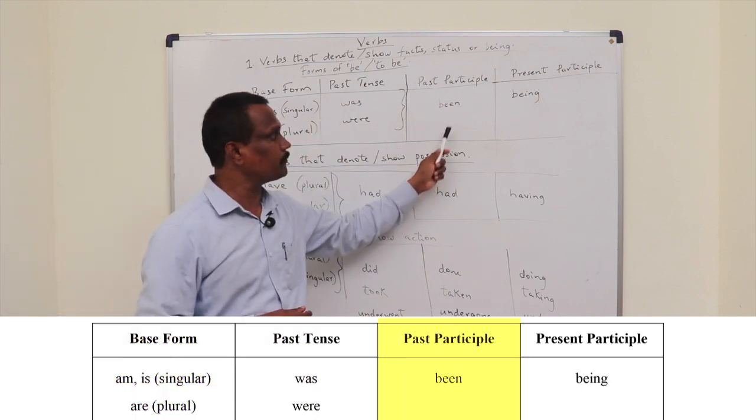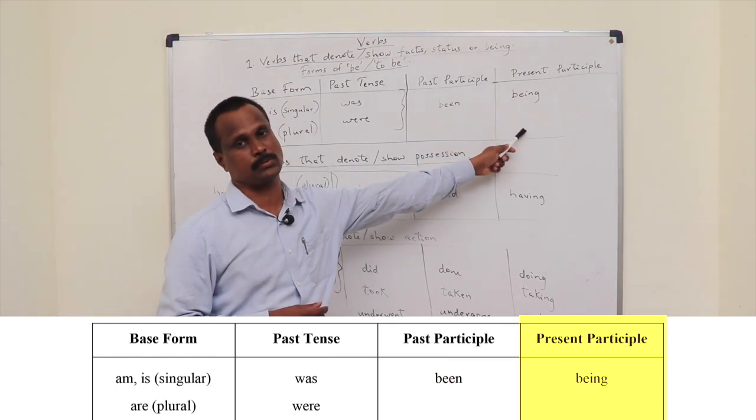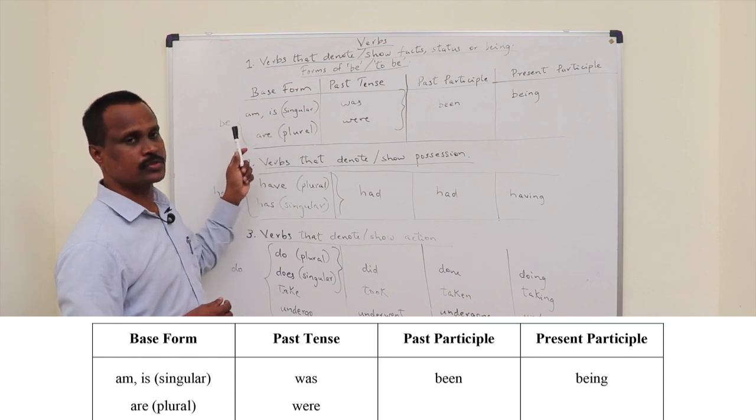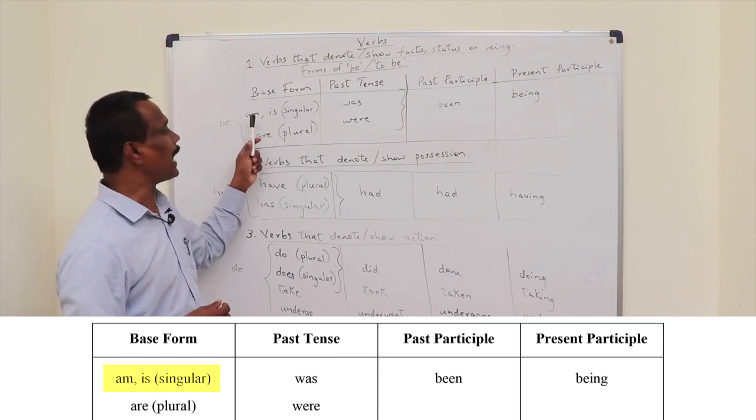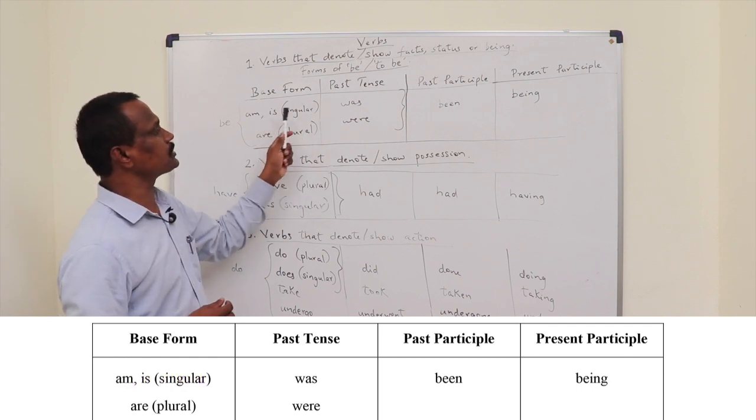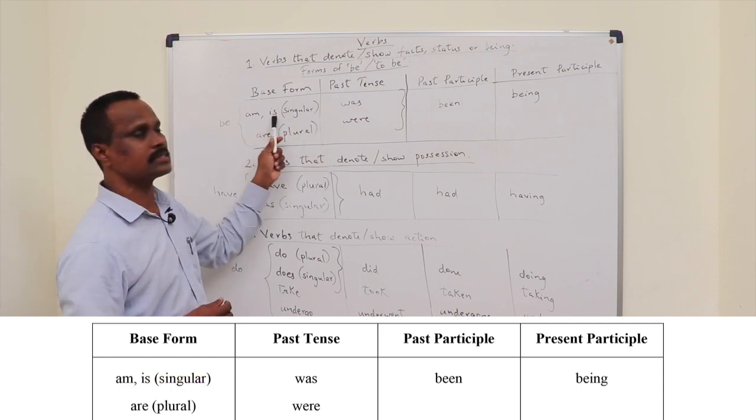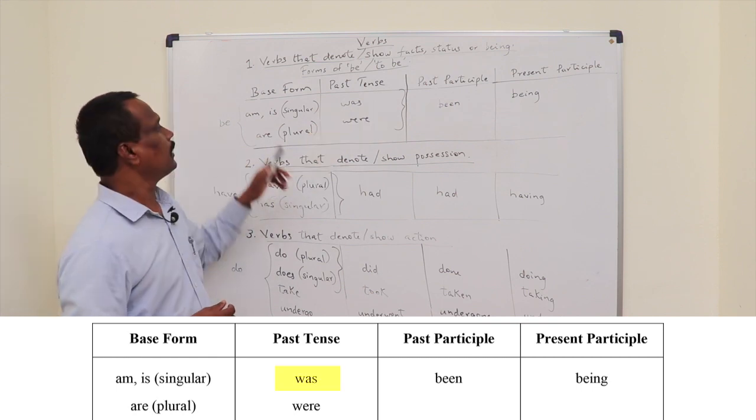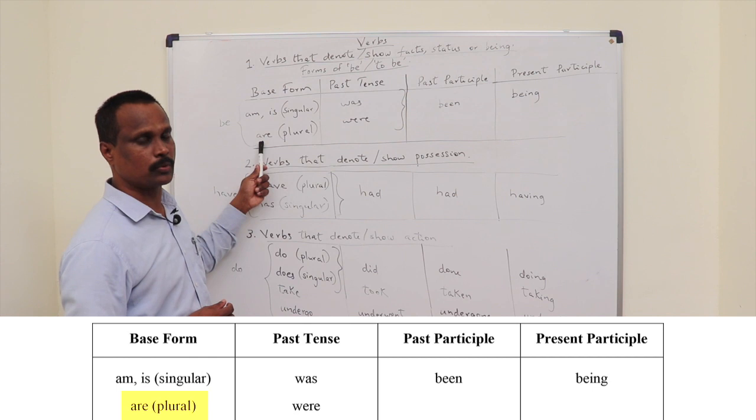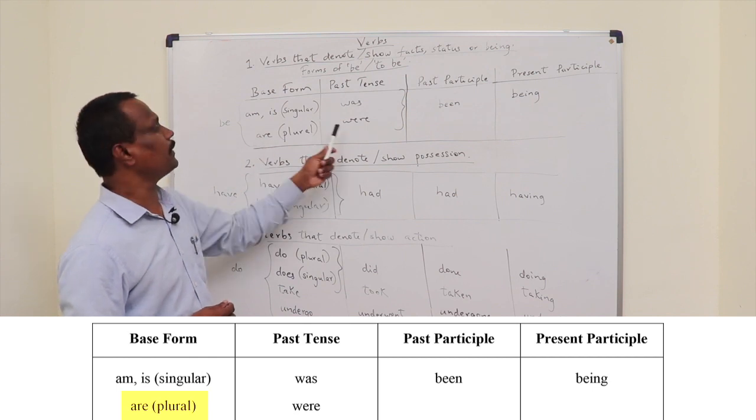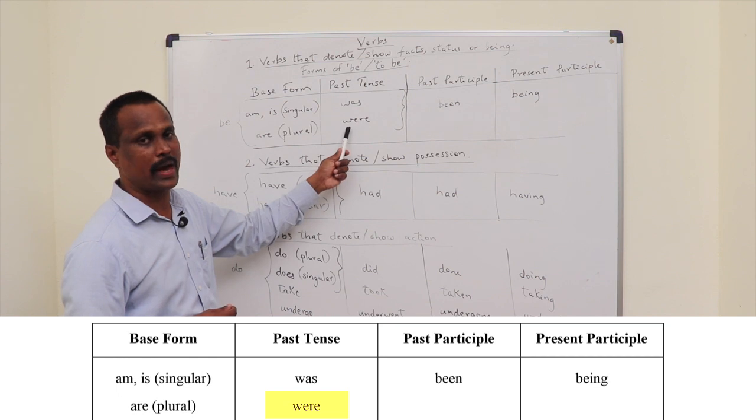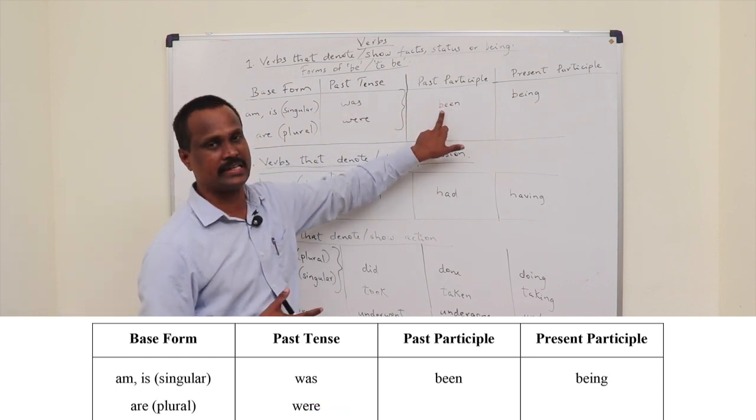past tense, past participle and present participle. In the base form or present tense, there are two forms, that is am and is, which are singular. And the past tense of both these is the verb was. Coming to the plural of the word be, are is the plural form. And the past tense of are is the word were. And there it is the word been.